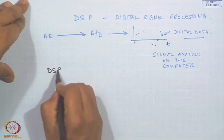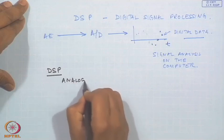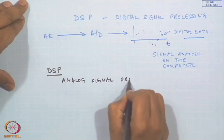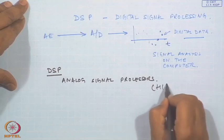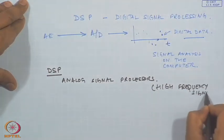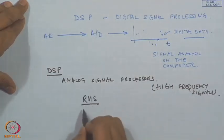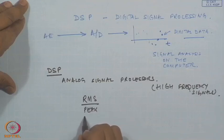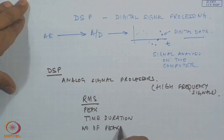However, when DSP was not developed in the early days, people used analog signal processors. In particular, because they are high-frequency signals, all we could do was at most find out the RMS level, the peak level, the time duration, or the number of peaks in a given time.